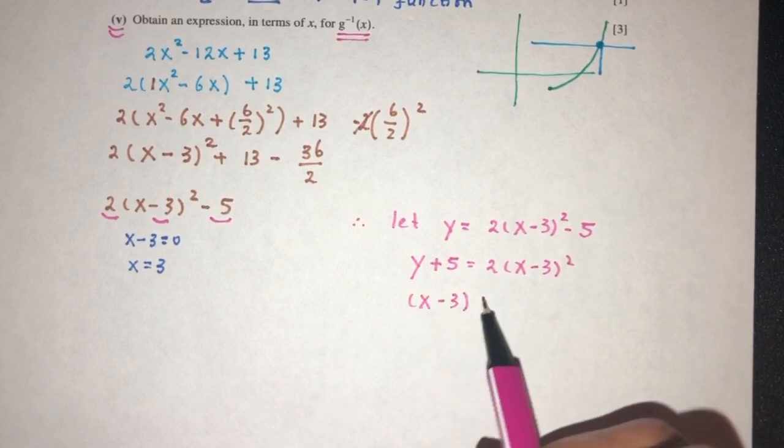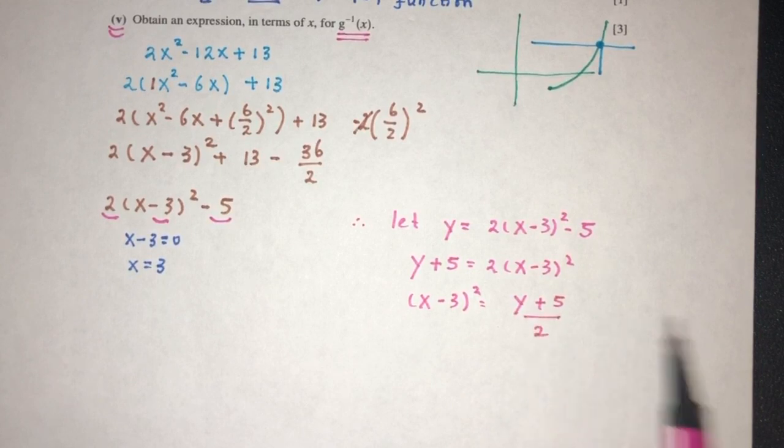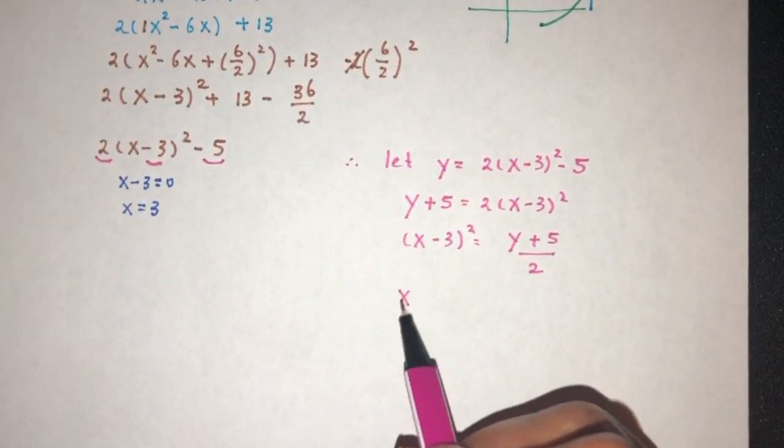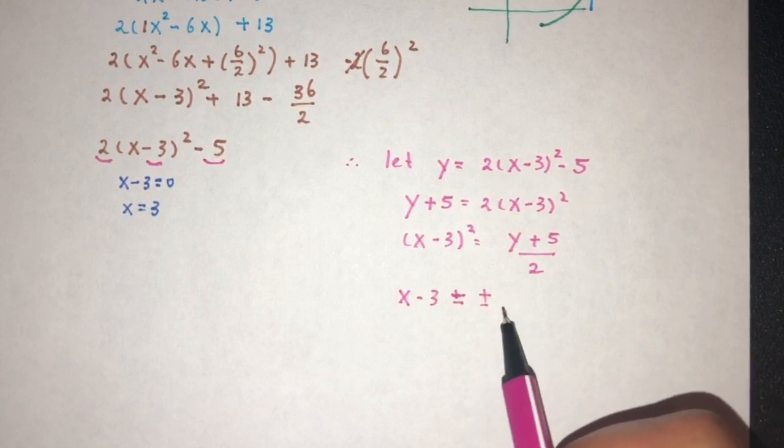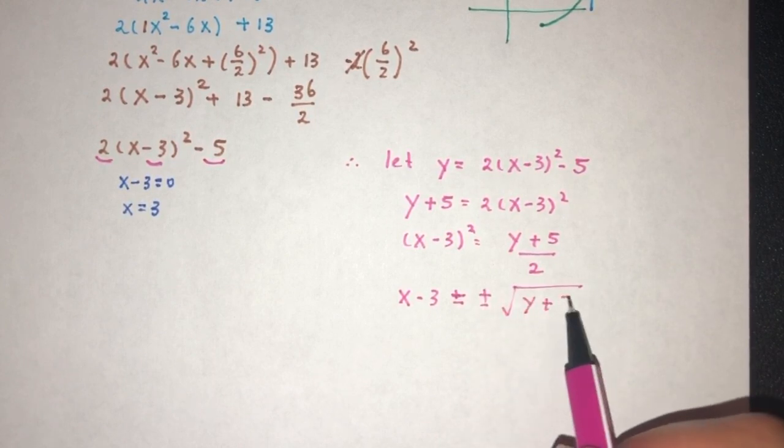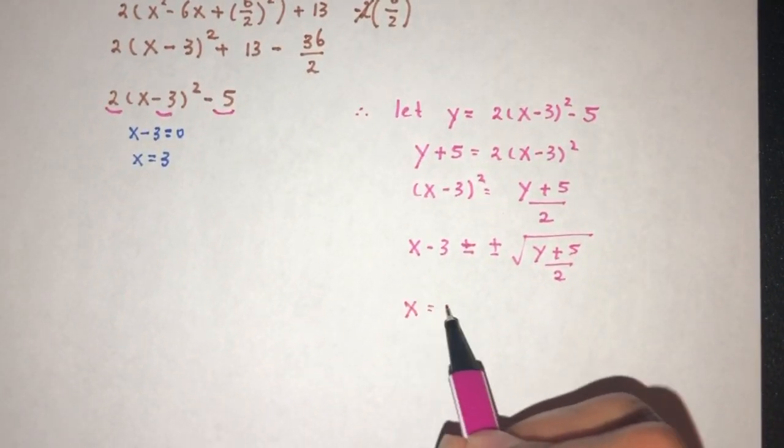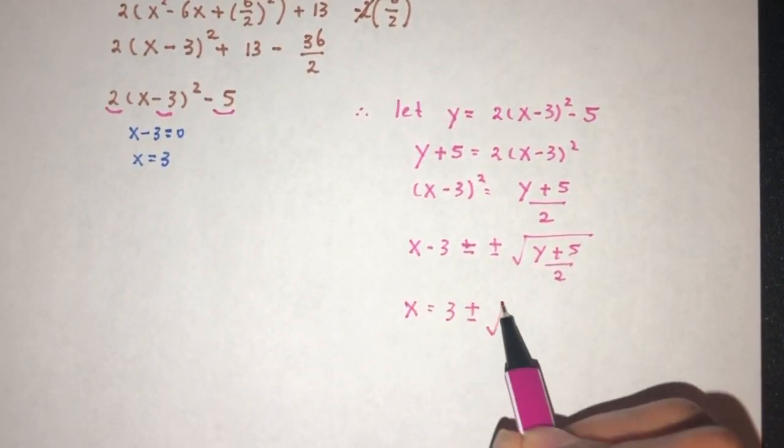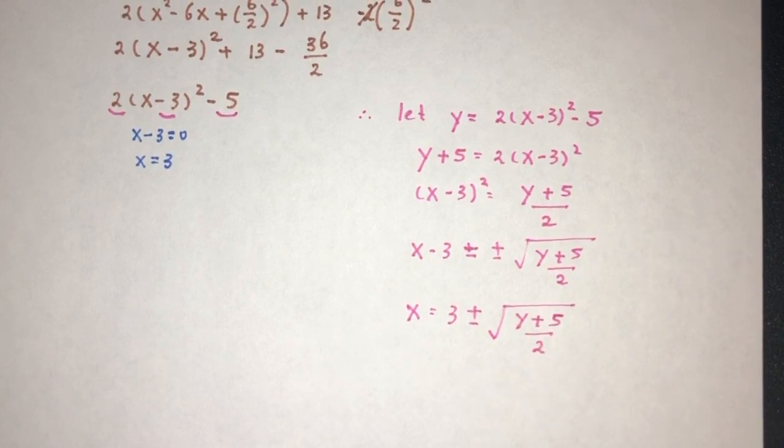x minus 3 square should be y plus 5 divided by 2. x minus 3 should be plus minus root of y plus 5 over 2. So finally, x will have to be 3 plus the value, or minus, y plus 5 over the value of 2. Now in the end we have to choose.